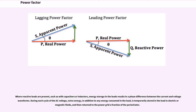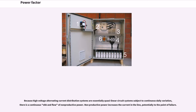During each cycle of the AC voltage, extra energy, in addition to any energy consumed in the load, is temporarily stored in the load in electric or magnetic fields, and then returned to the power grid a fraction of the period later. Because high-voltage alternating current distribution systems are essentially quasi-linear circuit systems subject to continuous daily variation, there is a continuous ebb and flow of non-productive power. Non-productive power increases the current in the line, potentially to the point of failure.